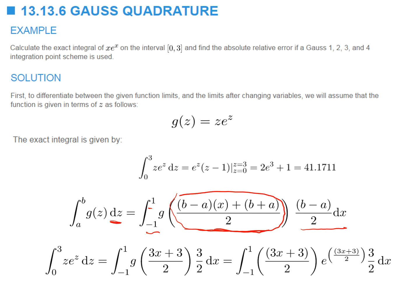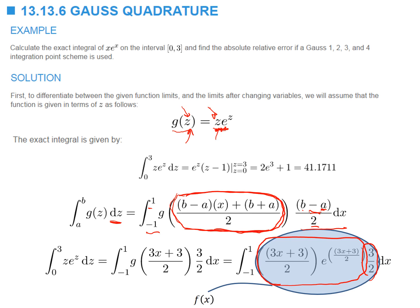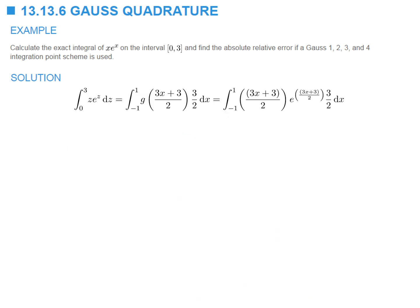Since g of z equals z multiplied by e to the power z, whatever term we substitute for z, we evaluate z times e to the power z at that term. The factor b minus a divided by 2 equals 3 minus 0 divided by 2, which is 3 over 2. This whole expression inside the integral is the function f of x that we can now apply Gauss quadrature to integrate.